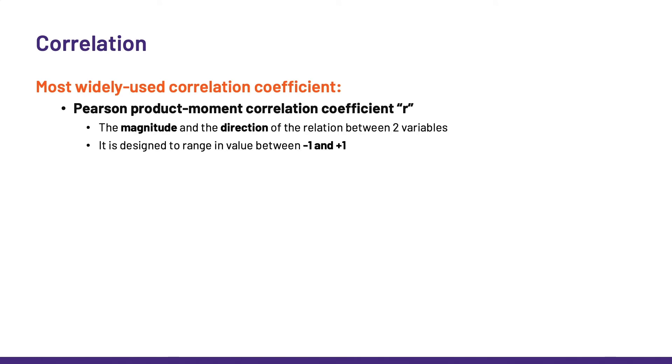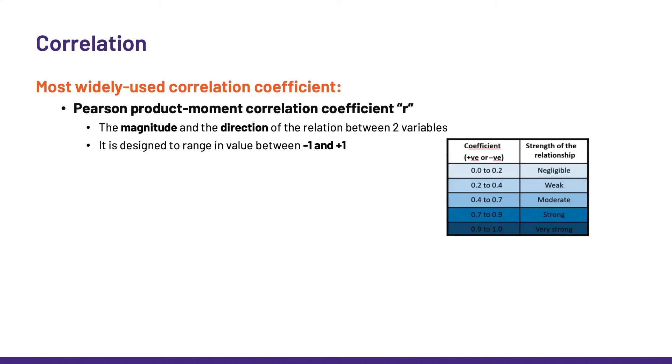Okay, so the most widely used correlation coefficient is Pearson product moment correlation coefficient r. Quite a mouthful, right? It quantifies the magnitude and the direction of the relationship between two variables, and it is designed to range in value between minus 1 and plus 1, and in strength goes from negligible to very strong. As a rule of thumb, beyond 0.6 in absolute value is worth exploring further.